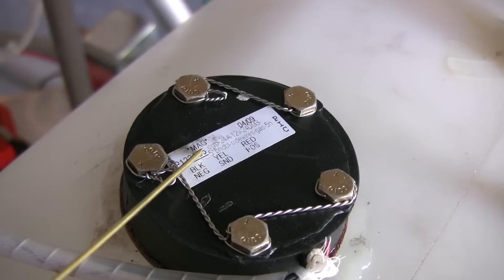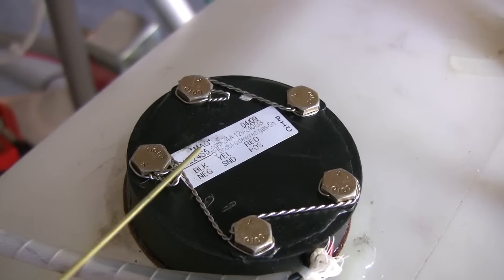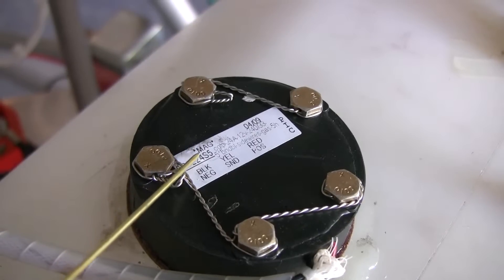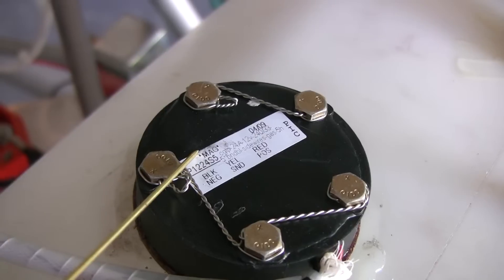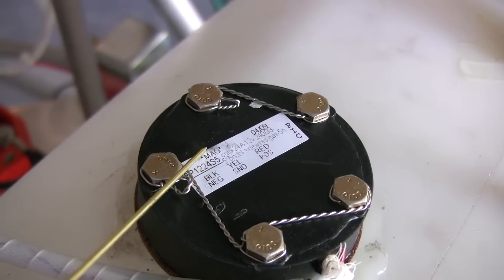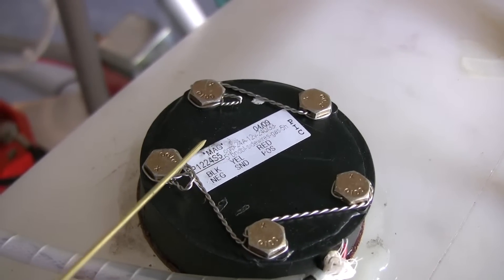You want to have the power turned off, put the magnet on this spot for two seconds. You want to count out 1001, 1002, and then take it off.